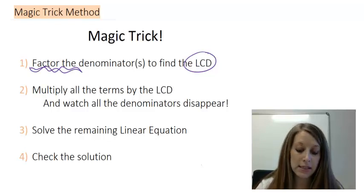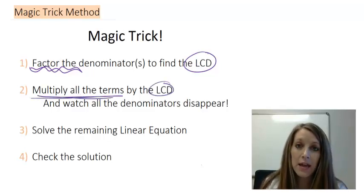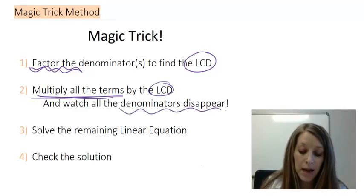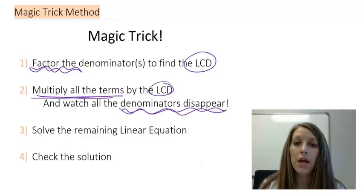Once we get our LCD, the process is to multiply all of those fractions by the LCD, and that means all of the denominators, meaning all of the fractions in this problem disappear. And since it is a disappearing act, that is why I call it my magic trick method.